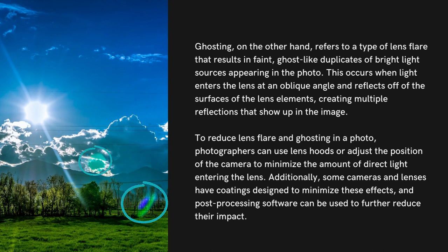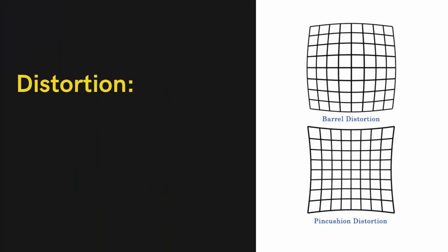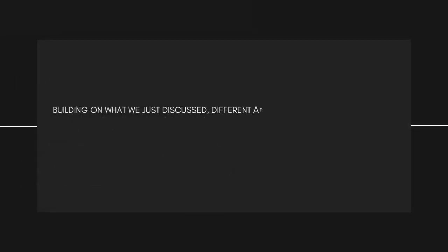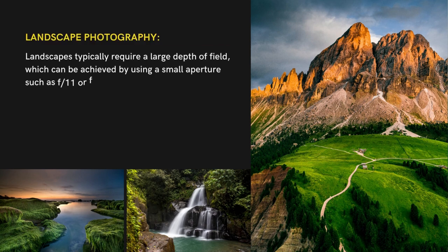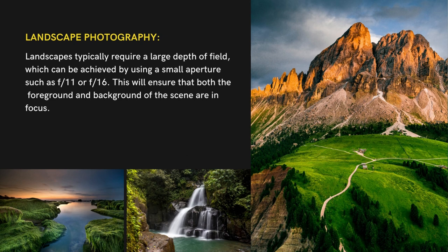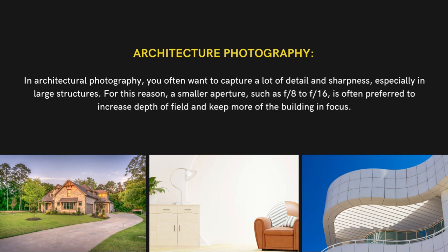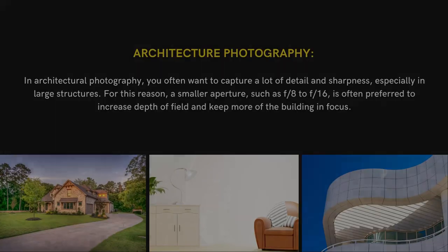Aperture can also affect the amount of lens distortion. Wide-angle lenses often have a tendency to produce barrel distortion, while telephoto lenses can produce pincushion distortion. Different apertures are used for different types of photography. Landscape photography typically requires a large depth of field, achieved by using a small aperture such as f/11 or f/16, ensuring both foreground and background are in focus. In architectural photography, a smaller aperture such as f/8 to f/16 is often preferred to increase depth of field and keep more of the building in focus.